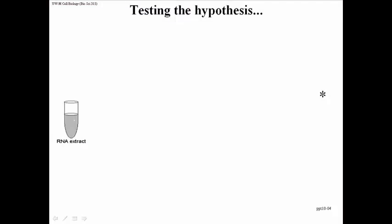We can test the signal hypothesis in the following manner. Here's our RNA extract again from cells that produce the IgG light chain only. We're going to do cell-free translation just as we did before, but this time we'll throw in some rough endoplasmic reticulum extracted from some of the cells in culture using differential centrifugation. We'll take the rough endoplasmic reticulum fraction and throw it in to the cell-free translation system.